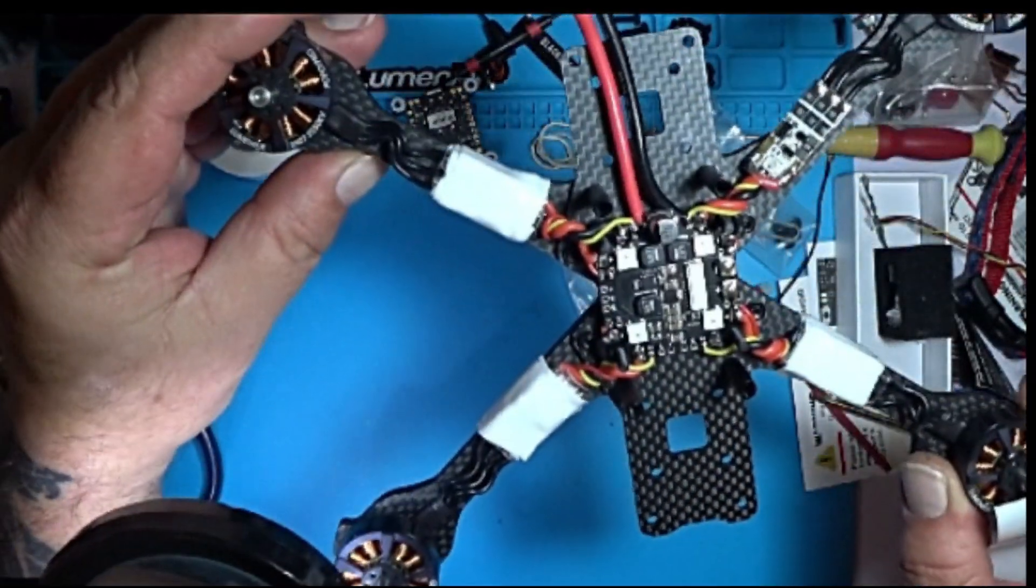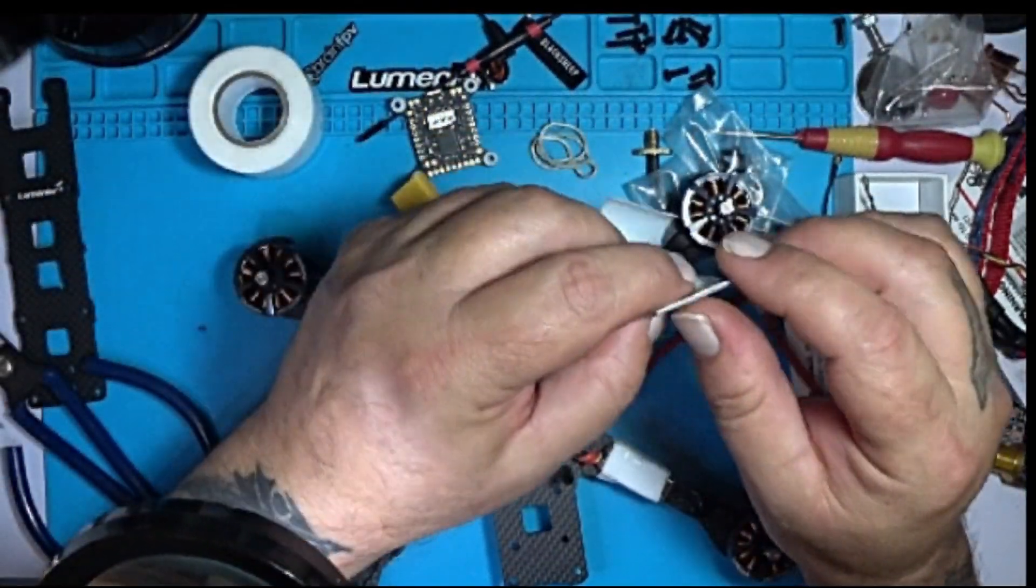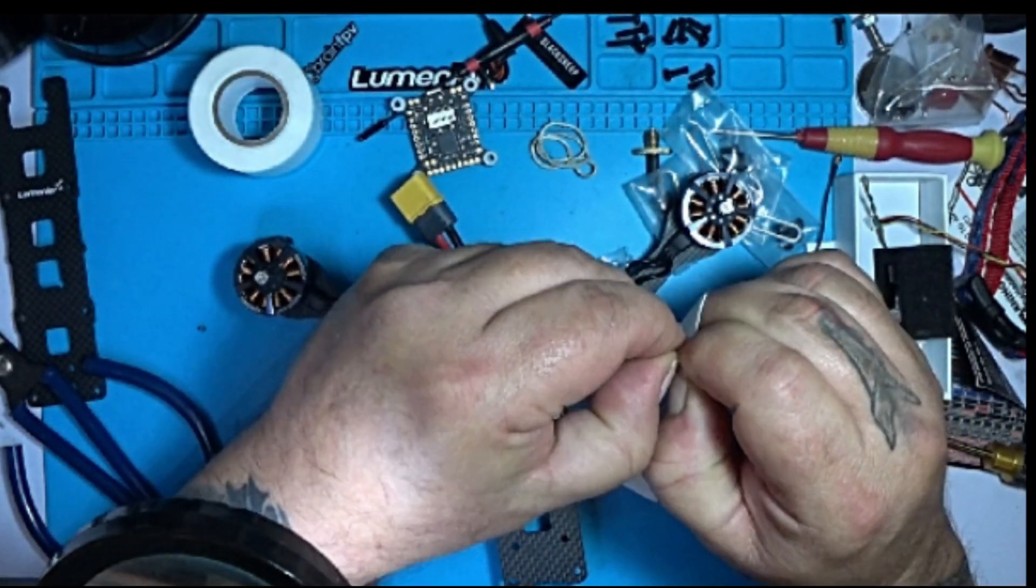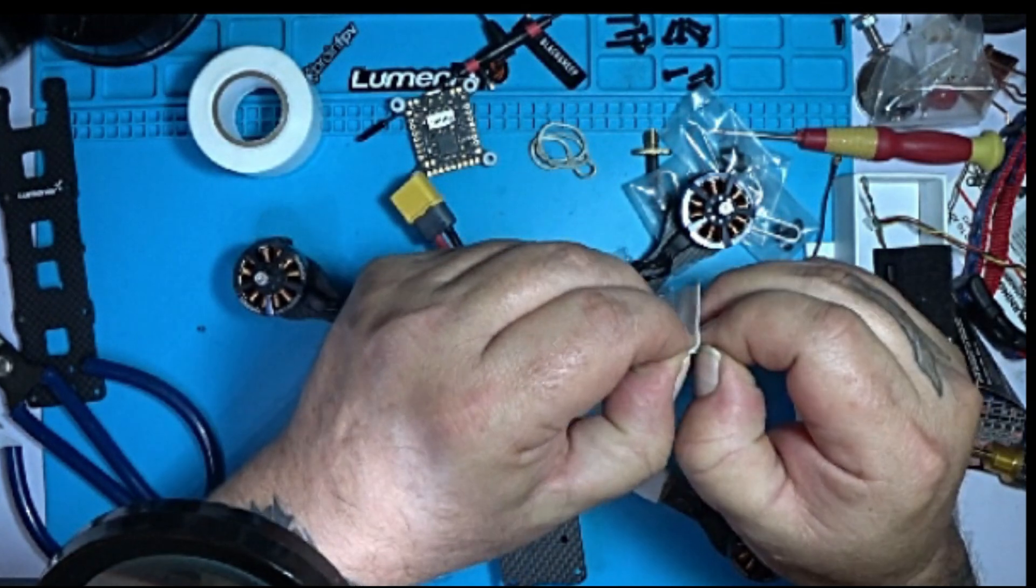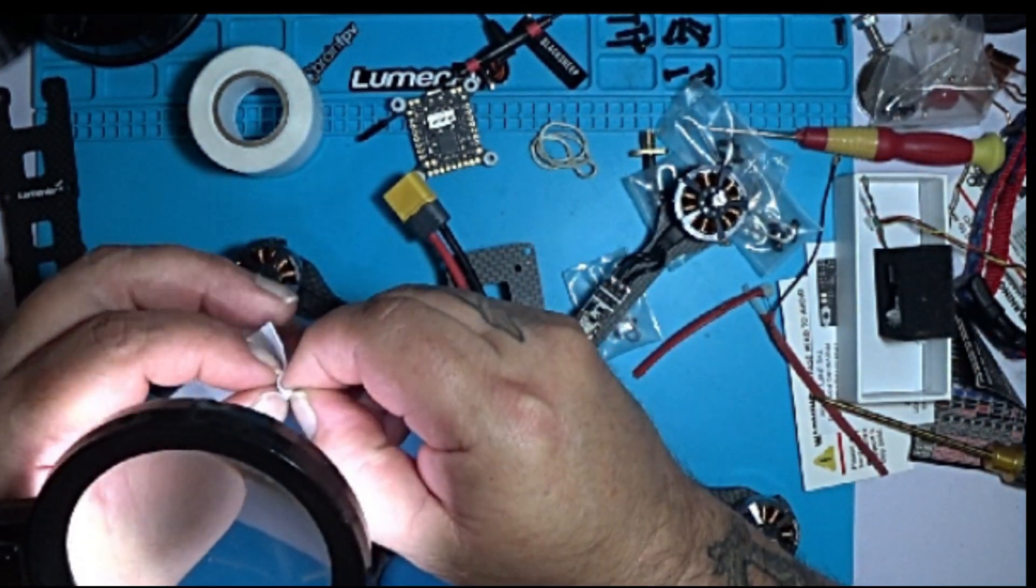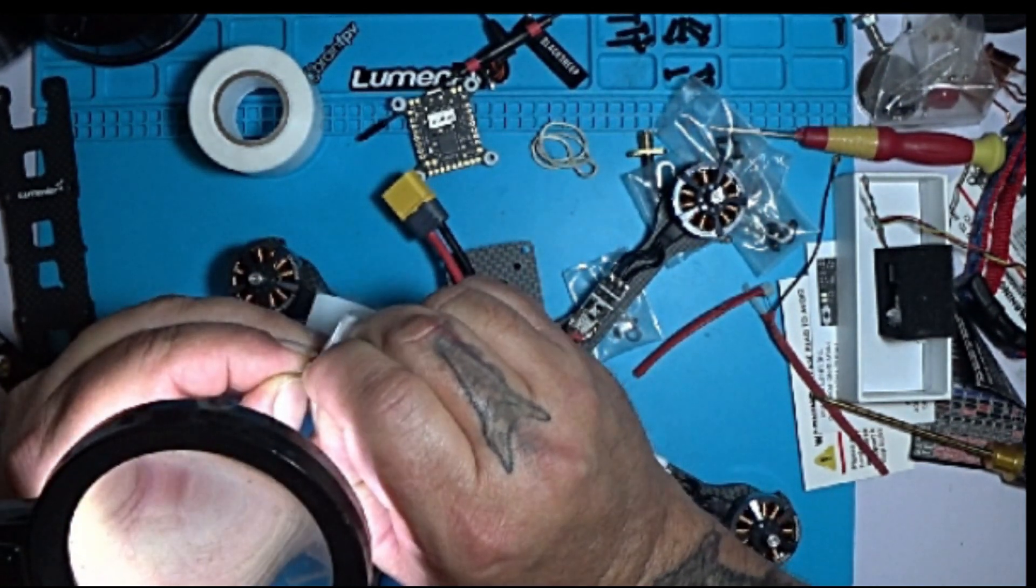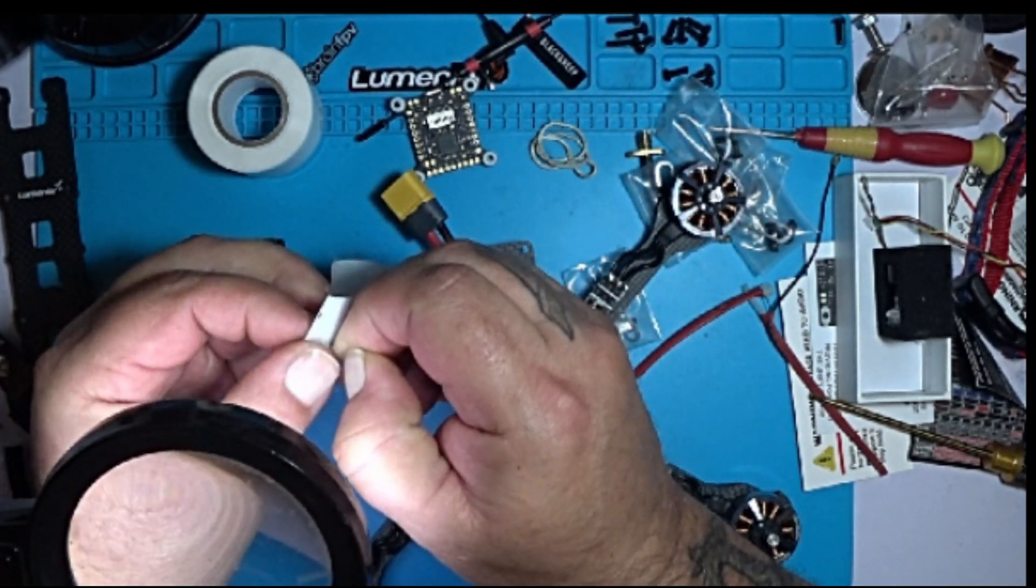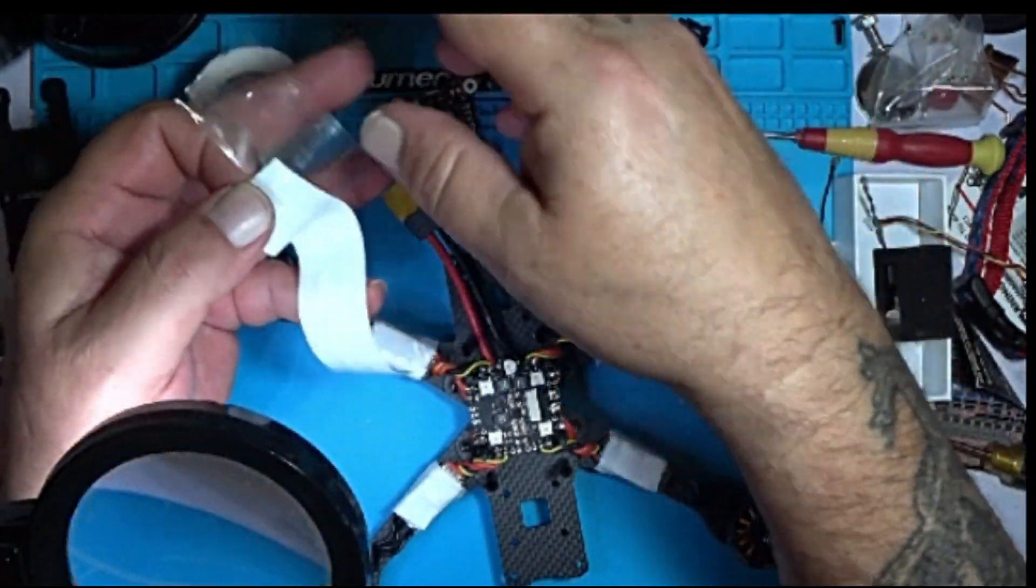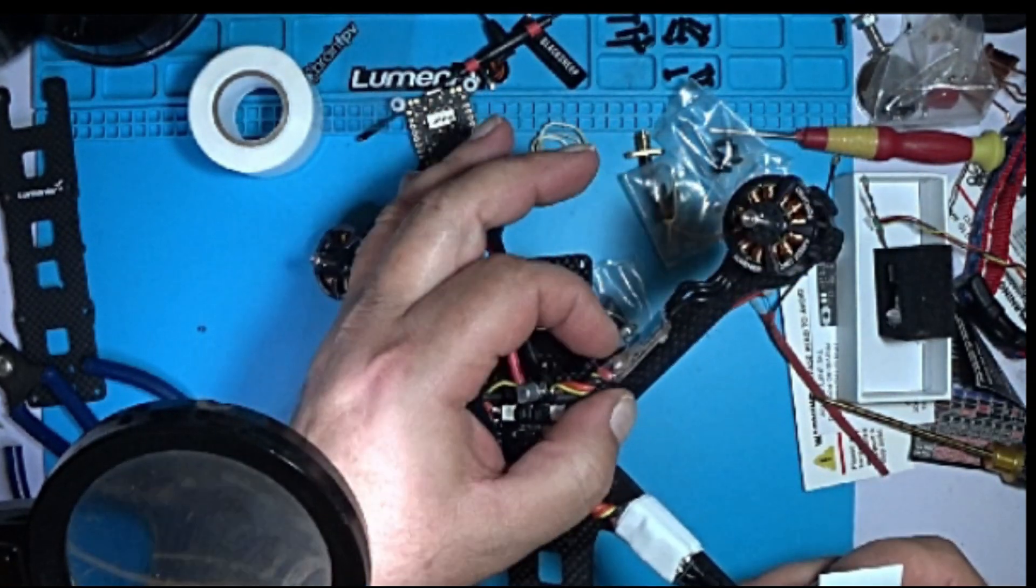What I like to do is heat shrink my ESC like so, and then remove the backing from the tape strips.